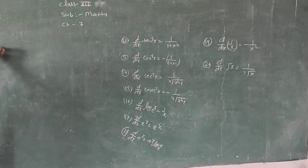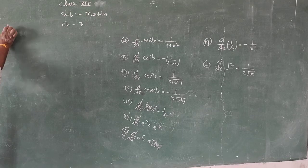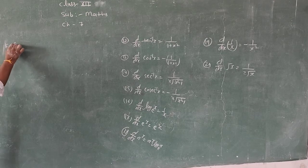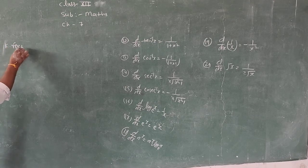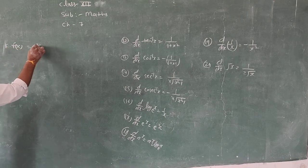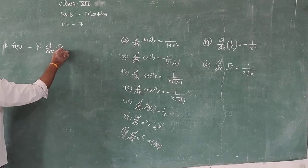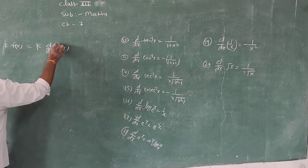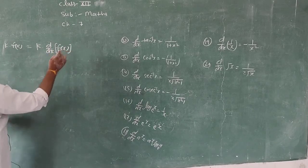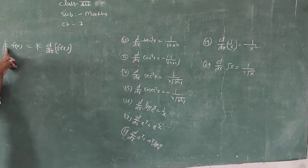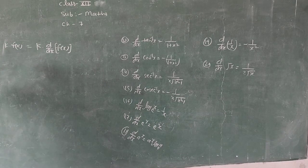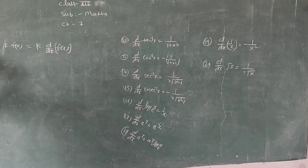Theorem 1: Differentiation of k into f(x) — the constant k comes outside, and we take differentiation of f(x). The constant comes out in multiplication.